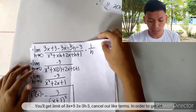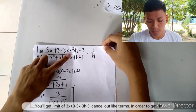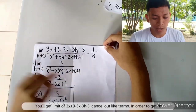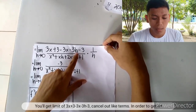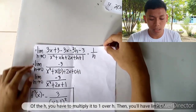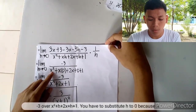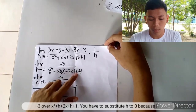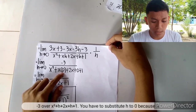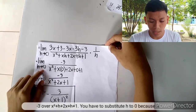Distribute the negative sign to get 3x plus 3 minus 3x minus 3h minus 3, and cancel like terms. To get rid of h, multiply by 1 over h and you will have negative 3 over x squared plus hx plus 2x plus h plus 1. Substitute h equals 0.